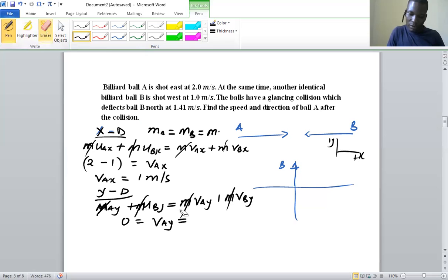After collision, the second ball moves north at 1.41 m/s, meaning the velocity of A in the y is -1.41 m/s. So we have the two components for the velocity.